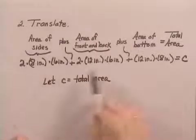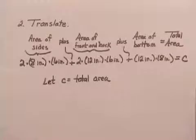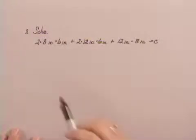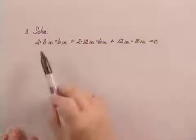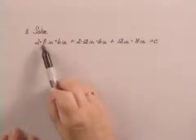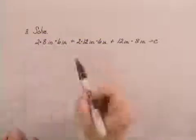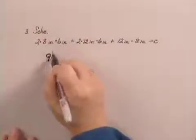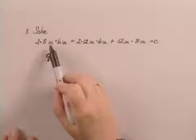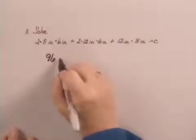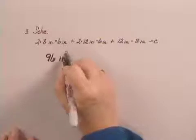Now that I have an equation, I can move to my next step, which is to solve the equation. To solve this equation, I need to carry out all of these multiplications and additions. I'm going to start by carrying out the multiplications. I have 2 times 8 inches times 6 inches. 2 times 8 times 6 is 96. And because I'm multiplying inches, something measured in inches by something measured in inches, I will have square inches as a unit.